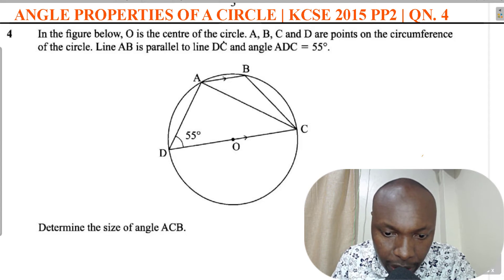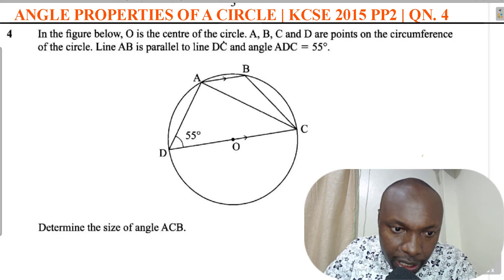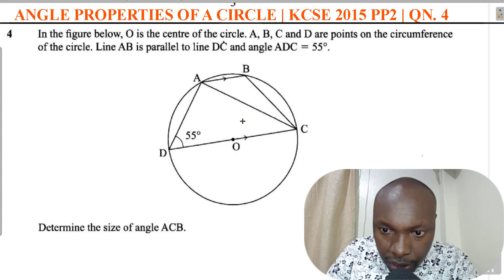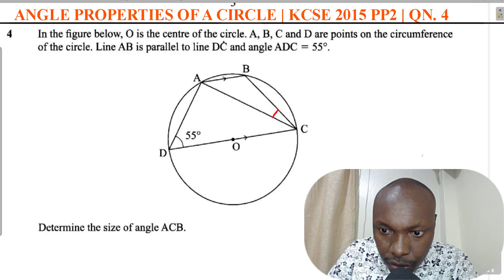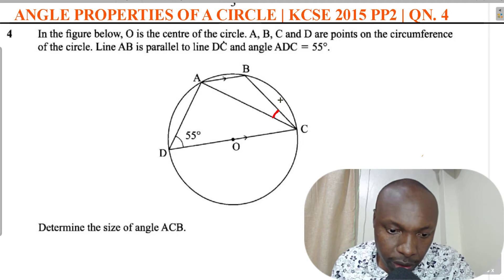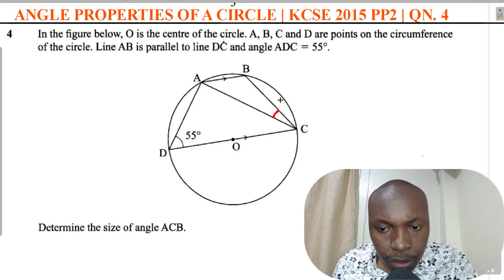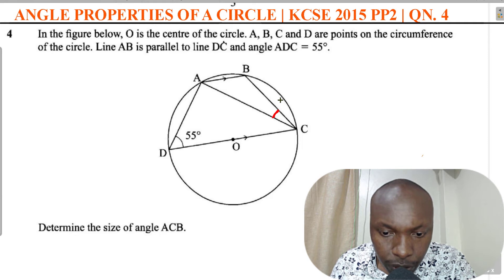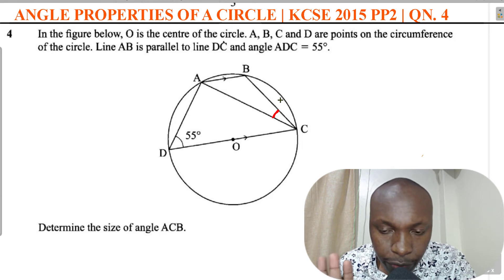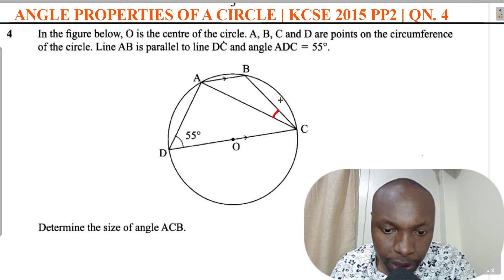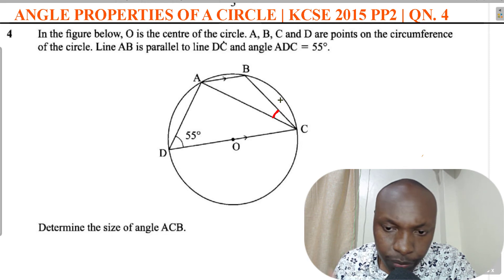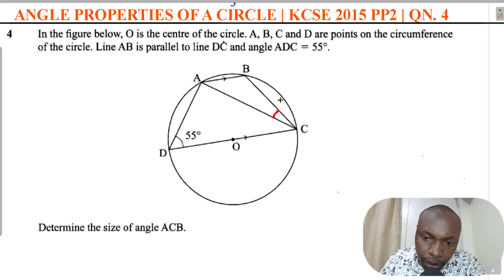The question asks us to determine the size of angle ACB. The best approach to solve this question is to use all the angle properties of a circle that you know, fill in all the angles you can find using those properties, and through that process you will be able to get angle ACB.